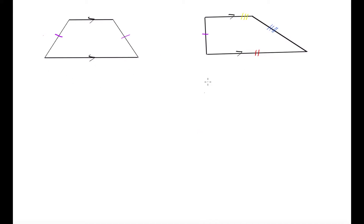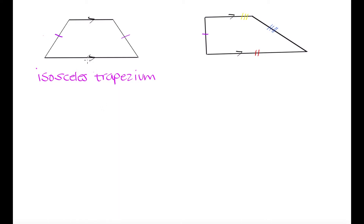We're going to have two different types of trapeziums, or as other people may say, a trapezoid — both are correct. The first type is known as an isosceles trapezium. An isosceles trapezium has the non-parallel sides of equal length — this side is congruent to this side. You may have come across the word isosceles when referring to triangles; an isosceles triangle has two sides of equal length, which can help you remember this property.